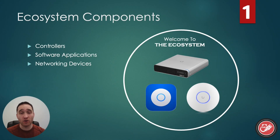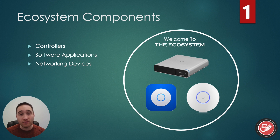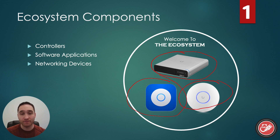Now let's look at the different components that go into the UniFi ecosystem. There are three main components that are always necessary, at least in some capacity, to deploy UniFi devices. It's extremely important that you understand each of these components and how they work together if you want to be successful in implementing UniFi for yourself or for others. These components are the controllers, the software applications, and the networking devices themselves.